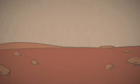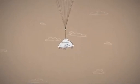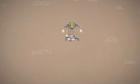Use radar to know exactly how high it is, free itself from the parachute, perfectly fire eight rocket engines to slow final descent, drop down dangling on four cables.